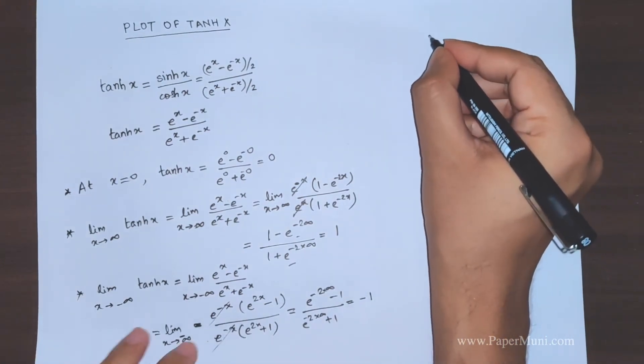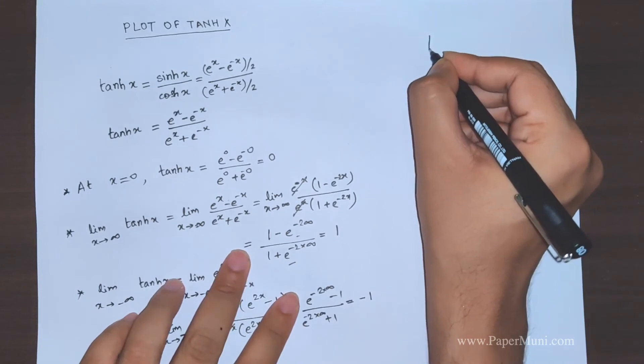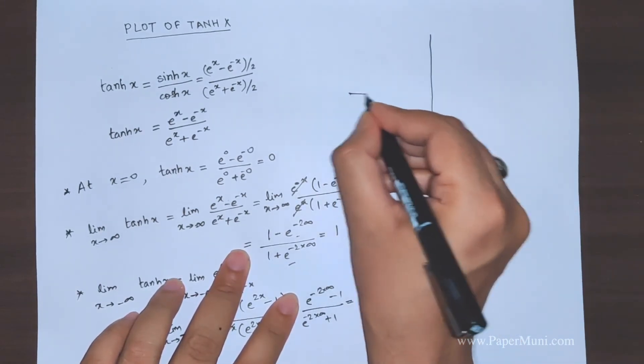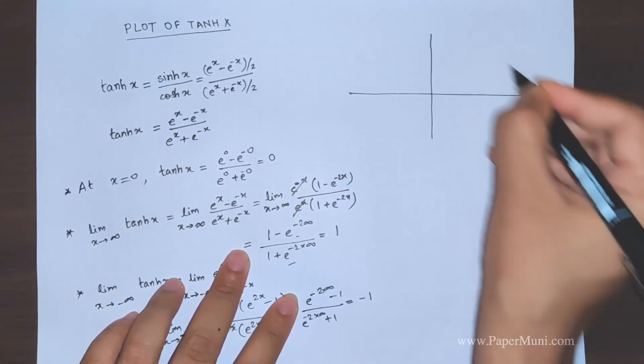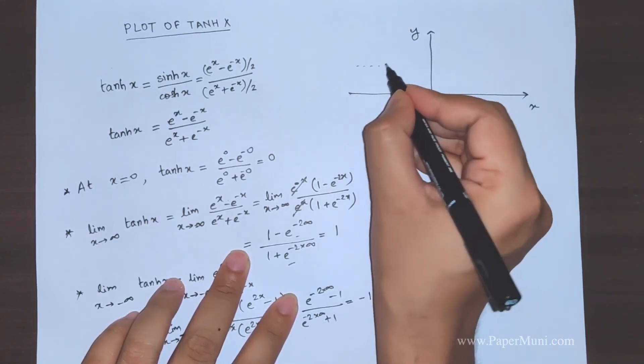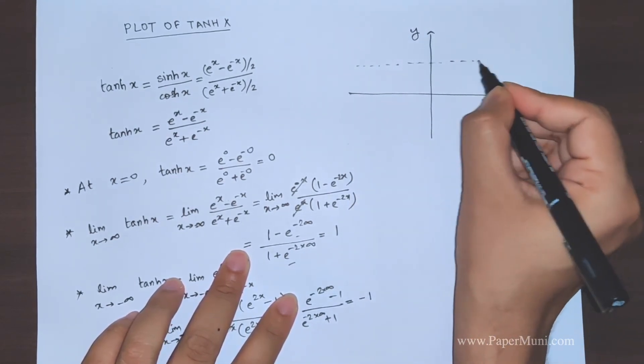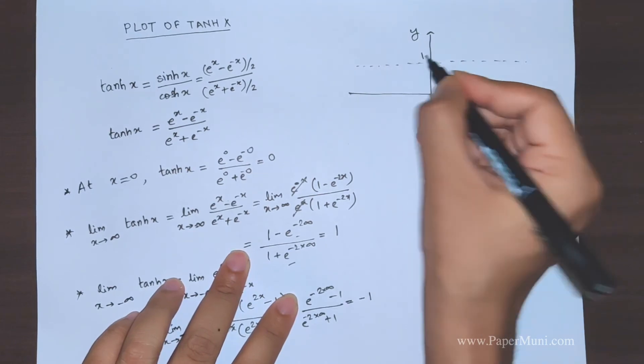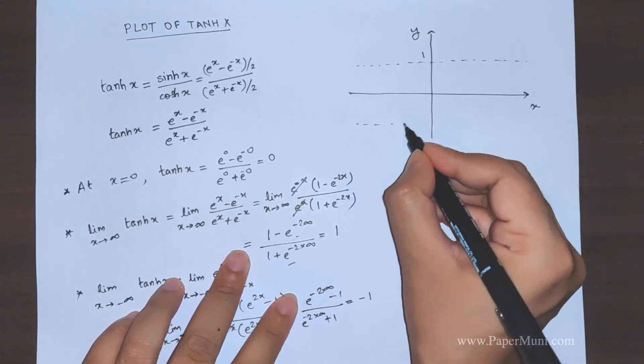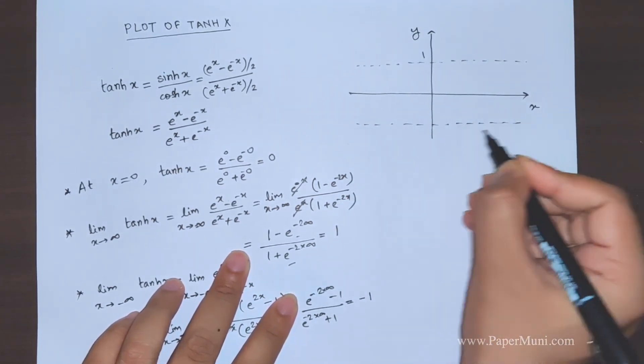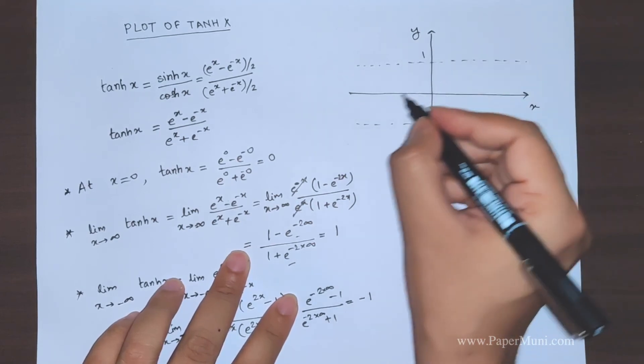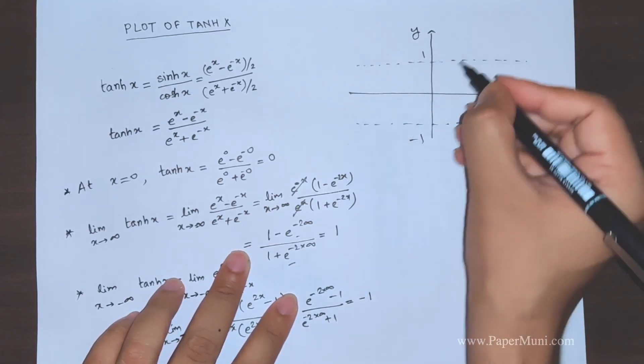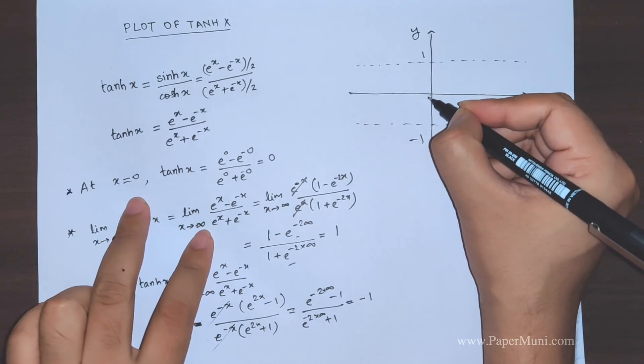The graph would look like this. There's the y-axis and x-axis. The reference lines: this is y equals 1 and the other one is y equals -1. We see that this goes to zero.